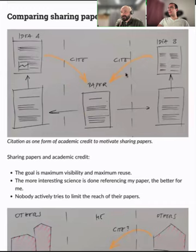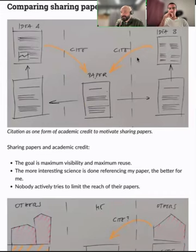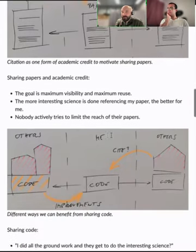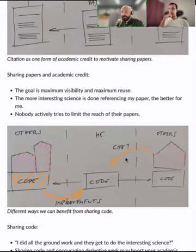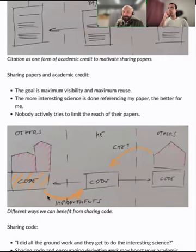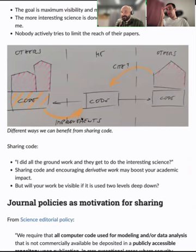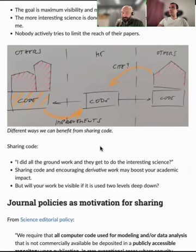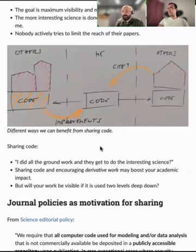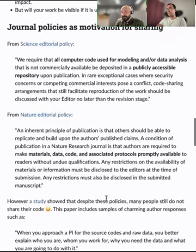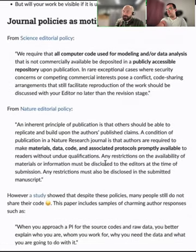Comparing sharing papers and sharing code: if a paper is sharing ideas and winning citations, code is more complex. Sometimes people just reuse your code, and sometimes it forms a foundation for something else to build upon. Eventually there are metrics — like tracking downloads of a package — to evaluate impact. Journal policies are also moving toward requiring a code availability statement, similar to data availability statements.